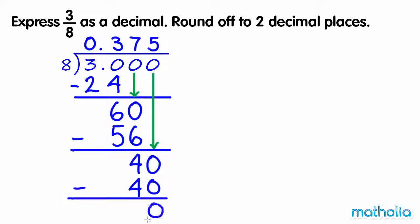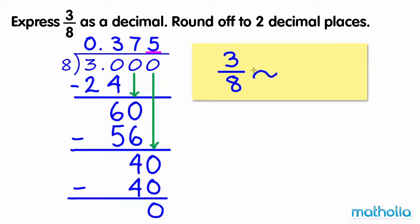The digit in the thousandths place is five. So we round up. Three eighths is approximately equal to zero point three eight.